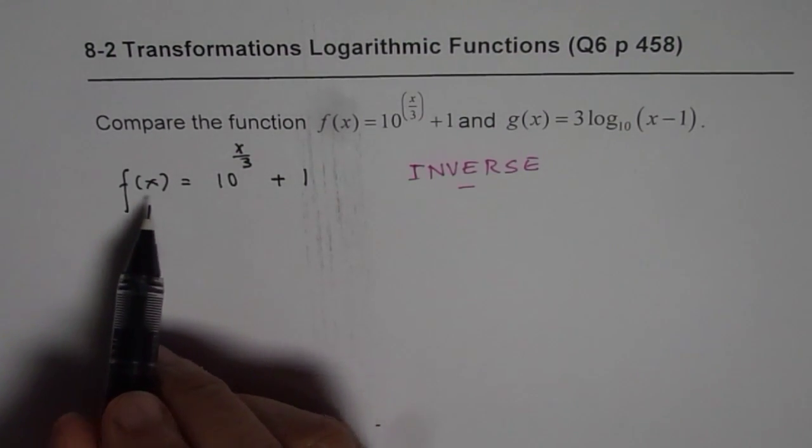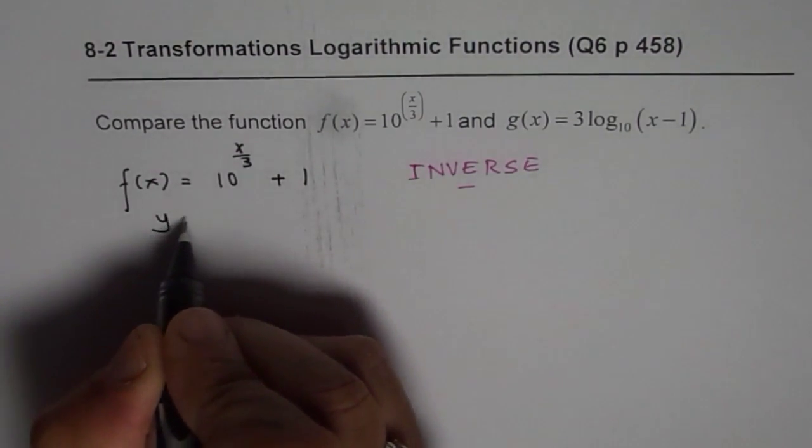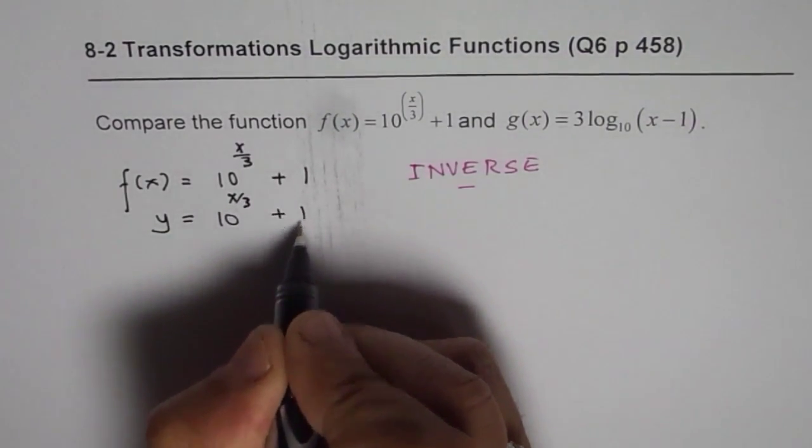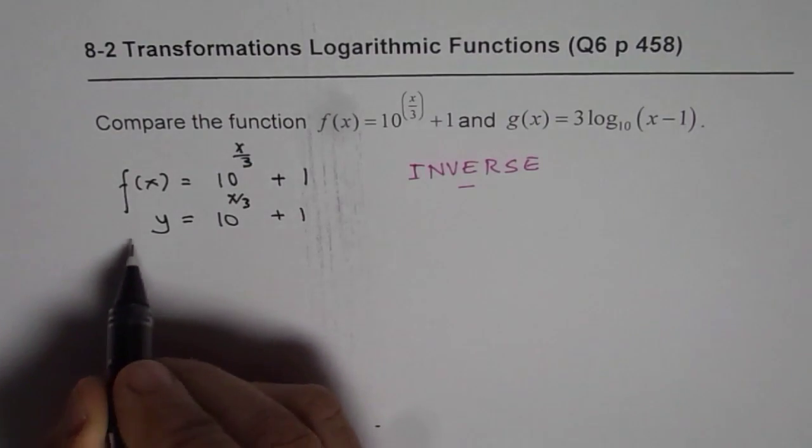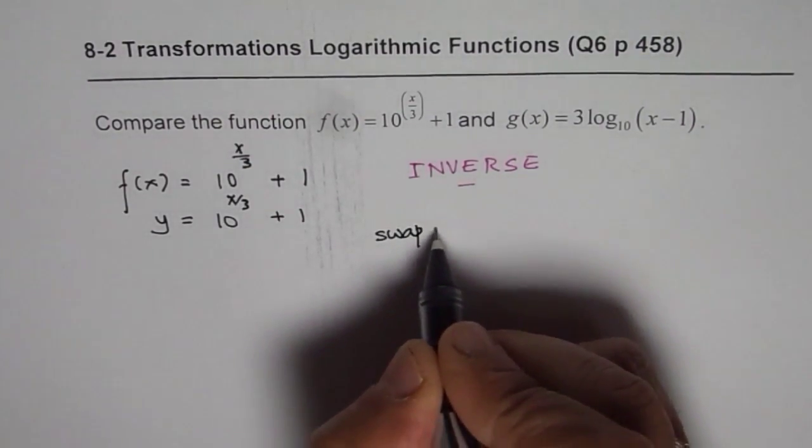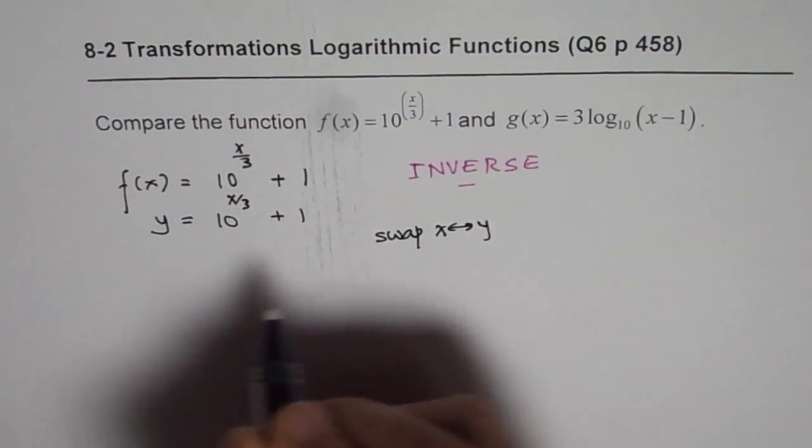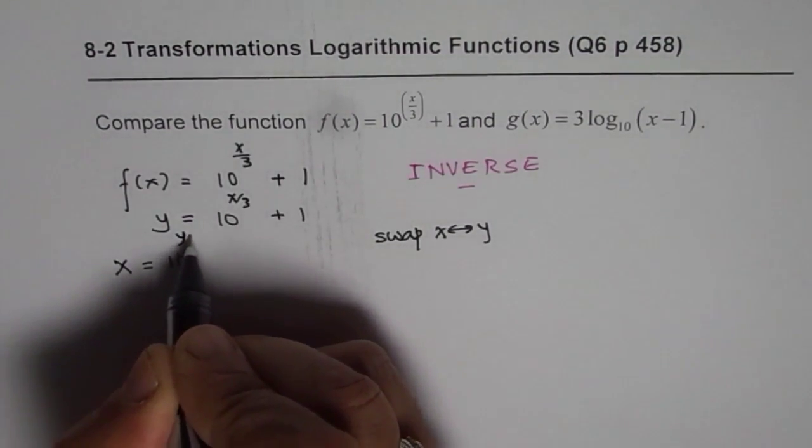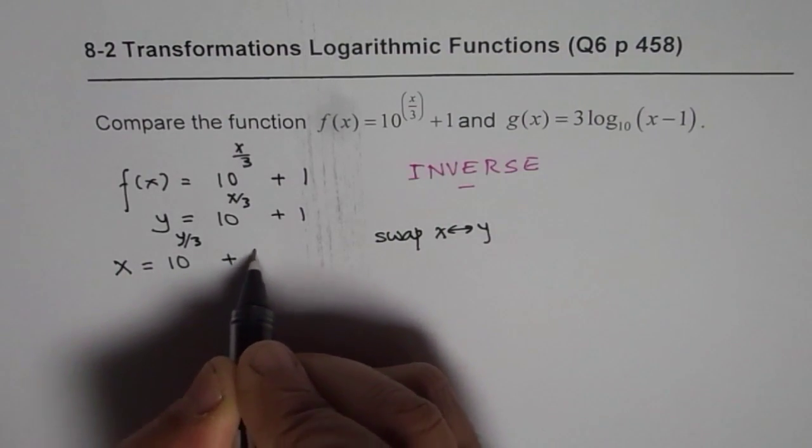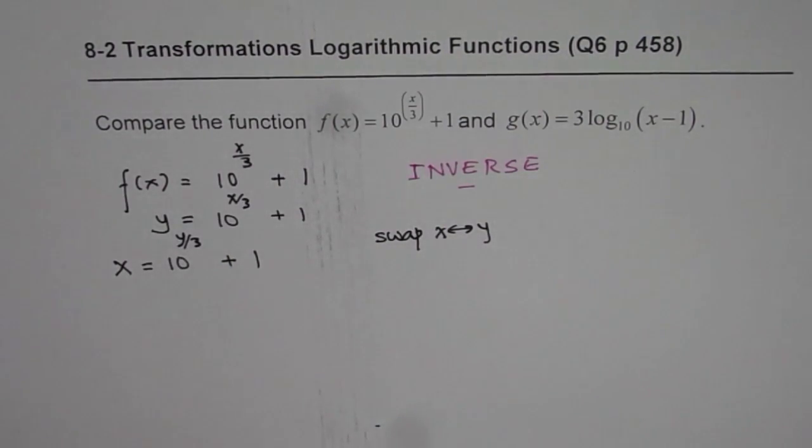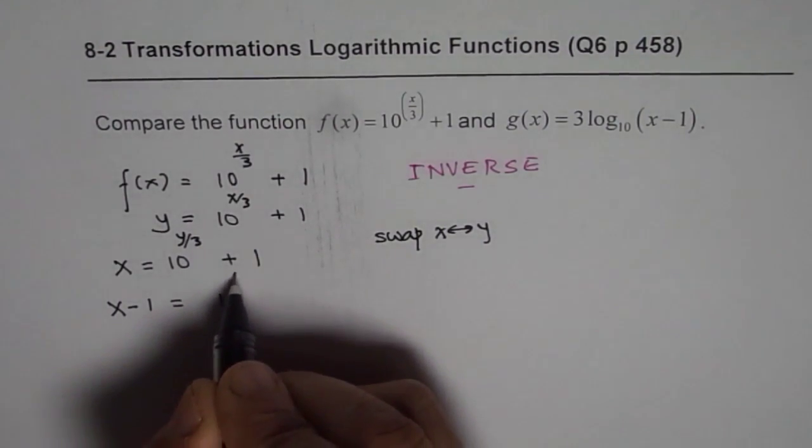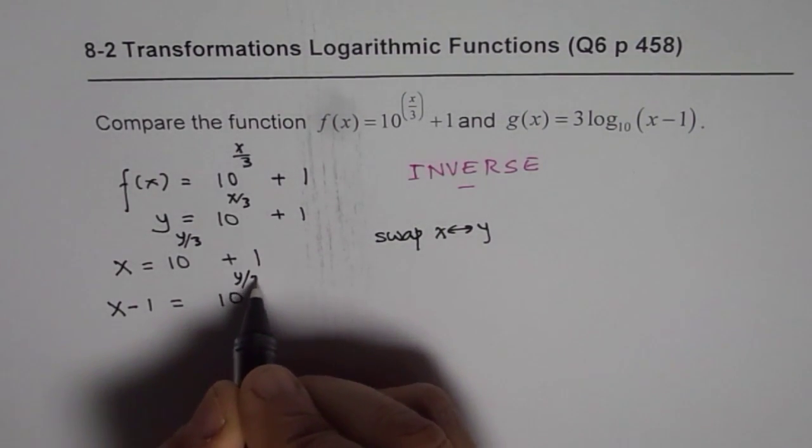Let's begin by writing this as y = 10^(x/3) + 1. To find inverse, we will swap. Now we will swap x with y. So we get x = 10^(y/3) + 1. We need to solve for y now. So we get x - 1 = 10^(y/3).